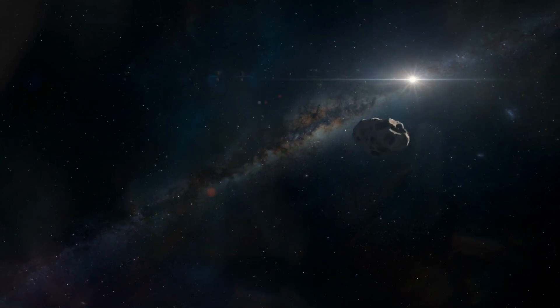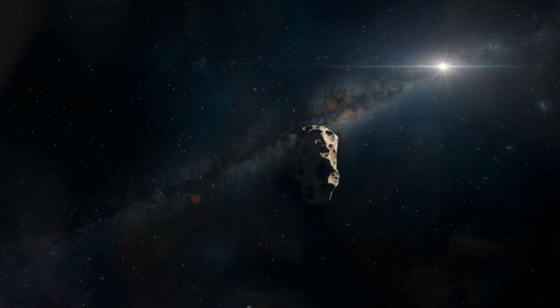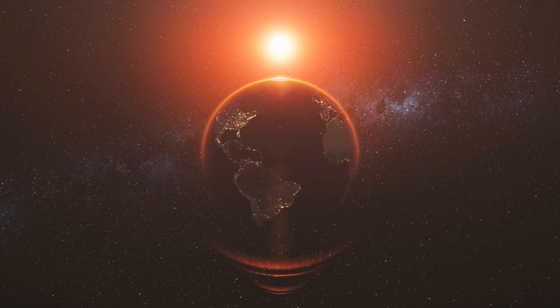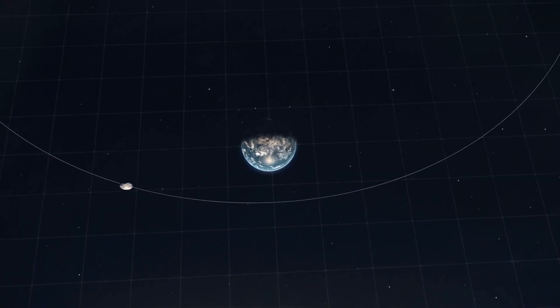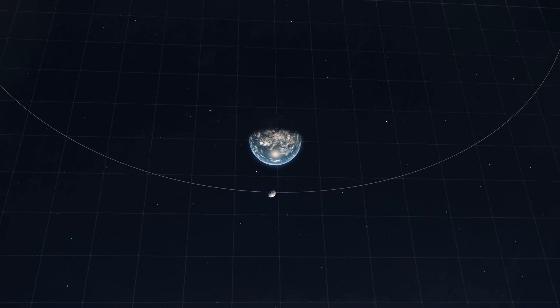However, there is one asteroid whose trajectory is constantly being monitored. On Friday 13, April 2029, an asteroid named Apophis will get closer to Earth, as close as our communication satellites.